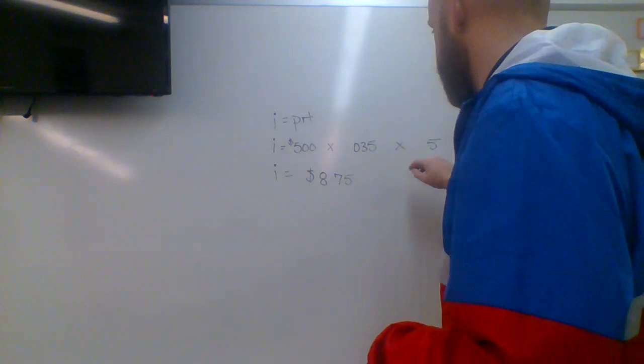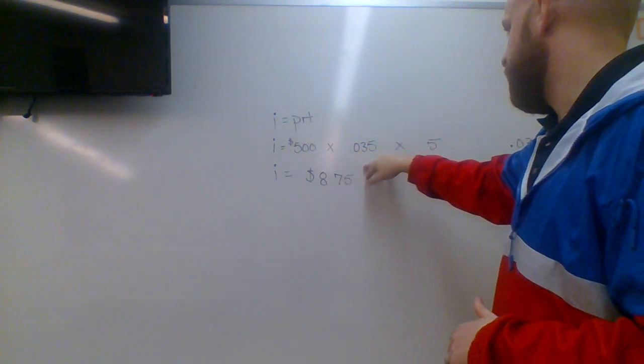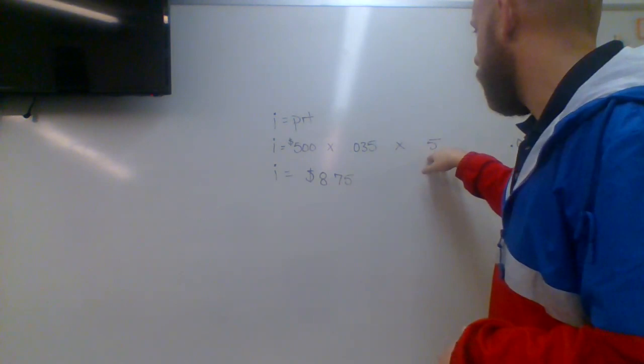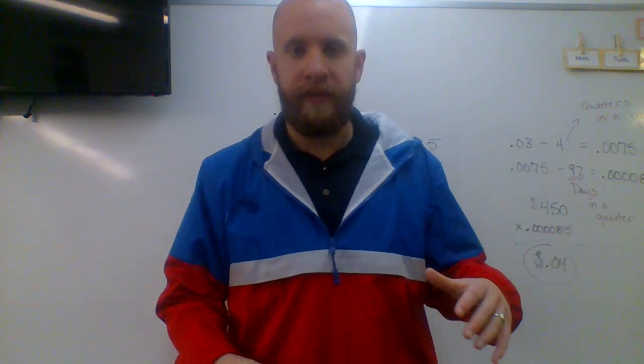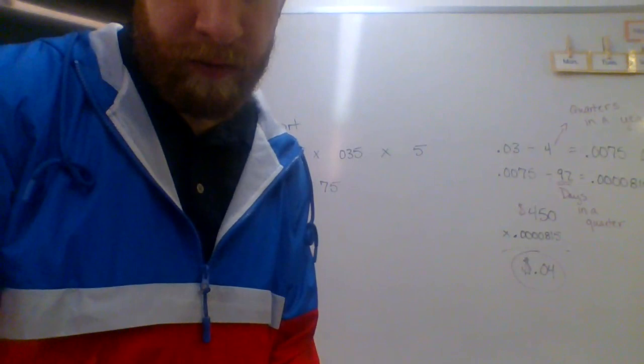So once you fill this in, the 0.5 we get, of course, because six months, half of the year, 50% of the year, 50%, 0.5. We multiply P times R times T, $500 times 3.5% times 0.5 of a year, gives us our interest of $8.75. And we've covered that concept a couple of times in some previous videos. So if you have some questions, go ahead and refer back to those. Otherwise, let's move on to what I want to talk to you about today.